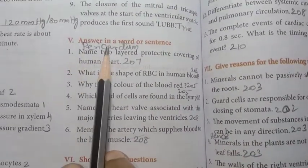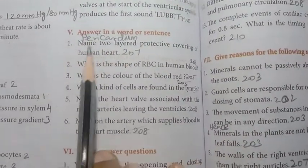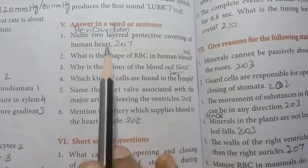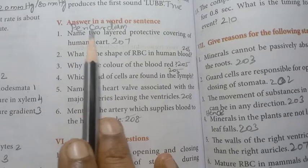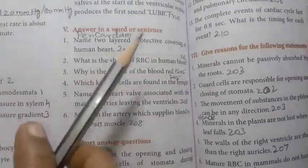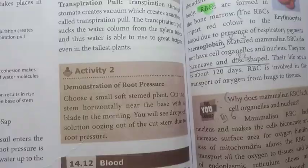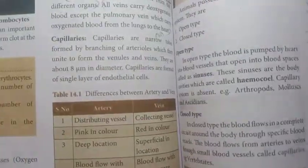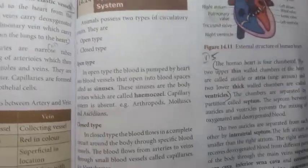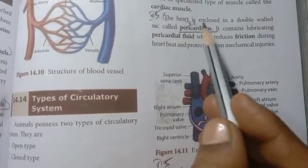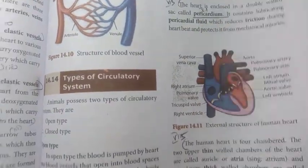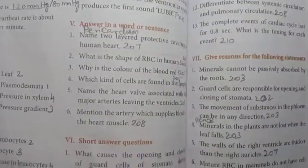Roman number five: answer in a word or sentence. First one: name two layered protective covering of human heart. The answer is pericardium. It is spelling when you go to page 207. The heart is enclosed in a double-walled sac called pericardium. Answer pericardium.